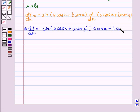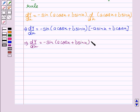This implies dy by dx equal to minus sin(a cos x + b sin x) into (b cos x minus a sin x).